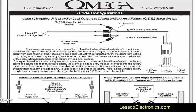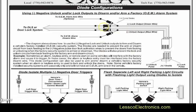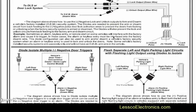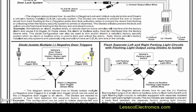Here's another scenario where you can have diodes connected to a door lock system and also triggering the factory arm or disarm wires in a vehicle — what's called a double diode configuration. This is a very popular scenario, especially for car alarm installers — a must-have. You have to know how to use diodes for these scenarios.